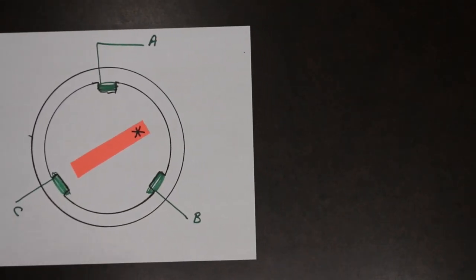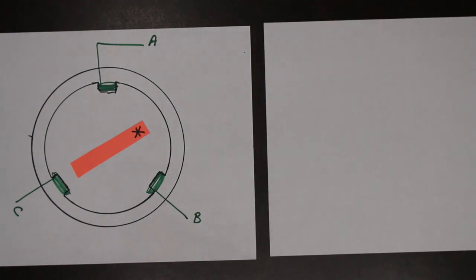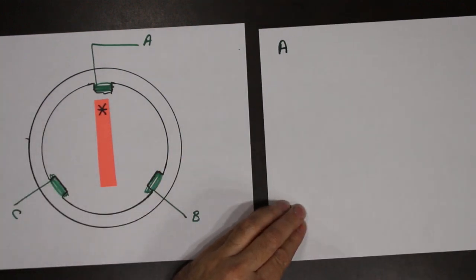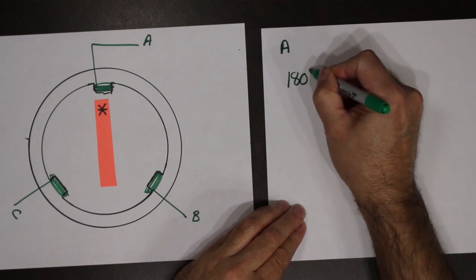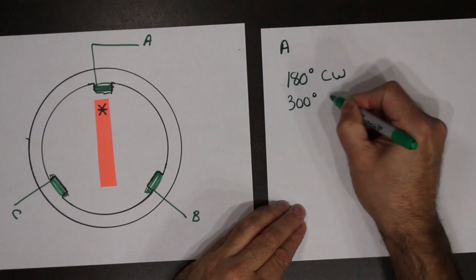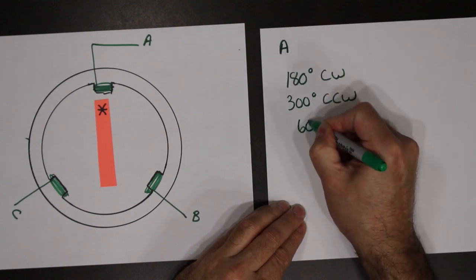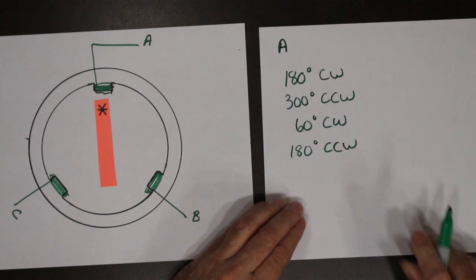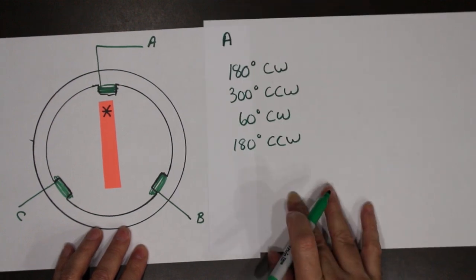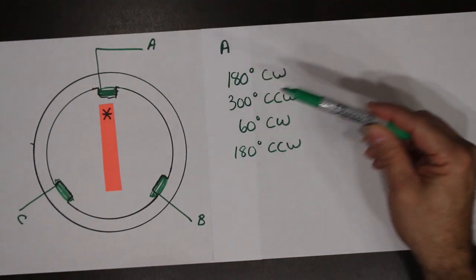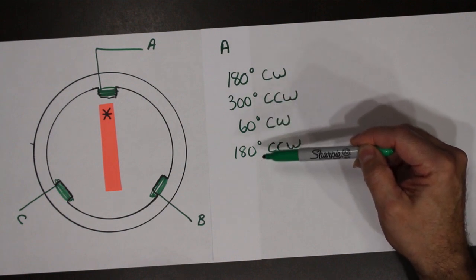Let's do an example with this motor. Starting from position A, we're going to go through the following rotations: 180 degrees clockwise, then 300 degrees counterclockwise, then 60 degrees clockwise, and then 180 degrees counterclockwise. The question is: what would the stepping sequence be, starting at point A, to go through all of this rotational movement?